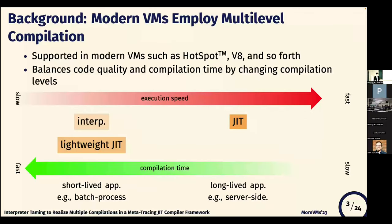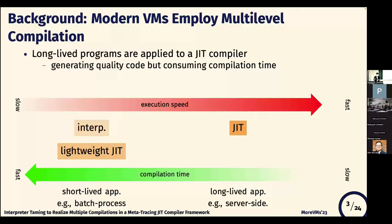We are also interested in multi-level compilation. Modern VM engines such as HotSpot, V8, and so forth need to handle a variety of programs, including not only short-lived programs like batch processing scripts, but also long-lived server-side applications. To improve overall performance, modern VM engines employ multi-level compilation, because it can balance code quality and compilation time by shifting between compilation levels. For example, long-lived programs are applied to the JIT compiler, because it can generate quality code at the cost of compilation time due to expensive optimizations.